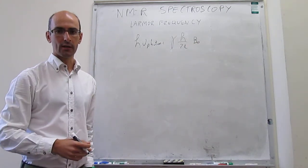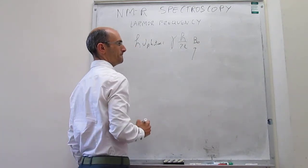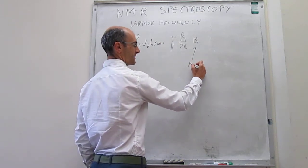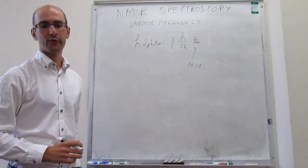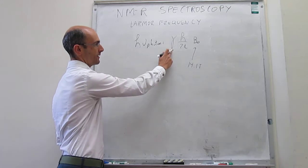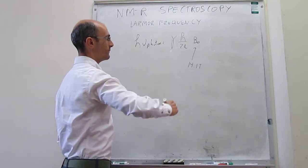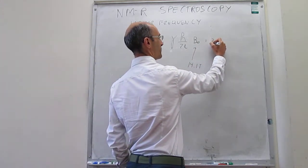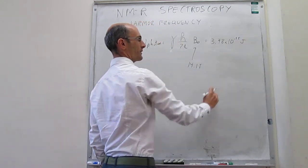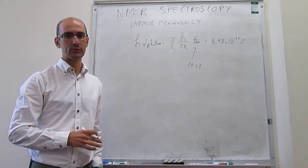We can carry out a simple calculation to see where those energies fall. Using an external magnetic field of about 14.1 tesla — a typical value for a modern NMR spectrometer — and using the magnetogyric ratio for the proton, we get a value of 3.98 × 10⁻²⁵ joules. So those energy gaps are on the order of 10⁻²⁵ to 10⁻²⁶ joules.